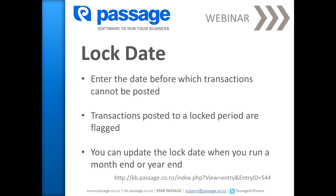This is how it works. You go to Settings and then open up Lock Date. Then you enter the date before which transactions cannot be posted. You can set up access rights so certain users can override the lock date as required. Any transactions posted to a locked period are flagged as such so you can report on them. You can update the lock date when you run a month end or year end.